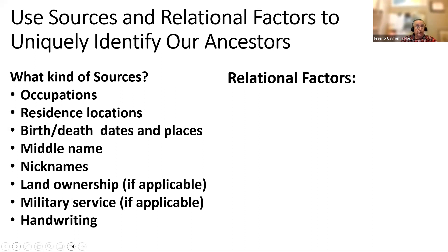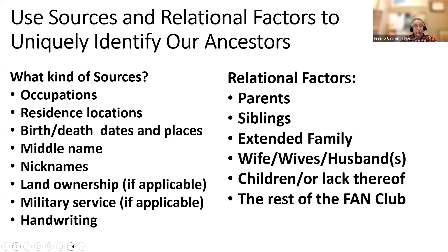The other side of the coin is relationships. You most definitely want to pay close attention to those as you're working with people. Who do the sources show as parents, siblings, or extended family members? Sometimes they're named as a grandchild to somebody, or you may find their grandchildren in a source. Then the spouses — what were the names of their spouses? And then children, or lack thereof.